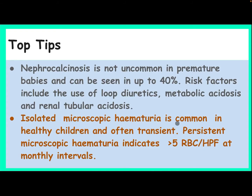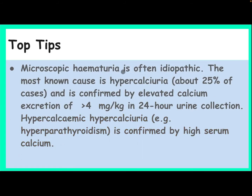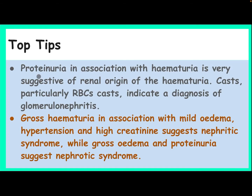Top tips: Isolated microscopic hematuria is common in healthy children and often transient. Persistent microscopic hematuria is defined as more than 5 RBCs per high power field at monthly intervals. Microscopic hematuria is often idiopathic; the most known cause is hypercalciuria, accounting for about 25% of cases, confirmed by elevated calcium excretion of more than 4 mg/kg in 24-hour urine collection. Hypercalcemia, for example from hyperparathyroidism, is confirmed by high serum calcium. Proteinuria in association with hematuria is very suggestive of renal origin. RBC casts, particularly RBC casts, indicate glomerulonephritis. Gross hematuria with edema, hypertension, and high creatinine suggests nephritic syndrome, while gross edema and proteinuria suggest nephrotic syndrome.